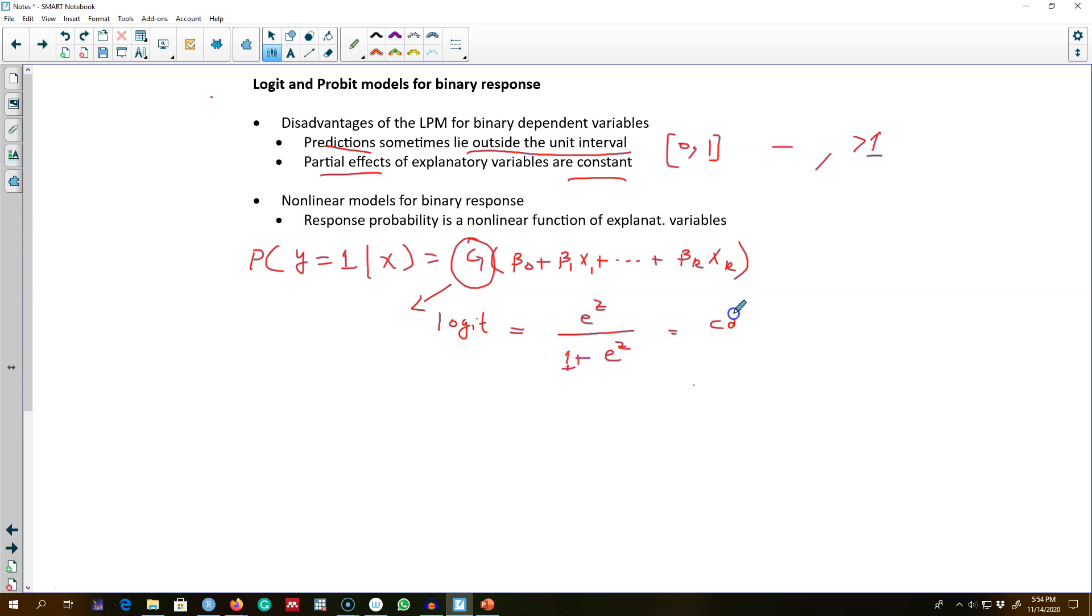Similarly, the second type of model assumes a different form of g, and this type of model is called a probit model.